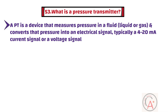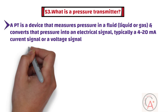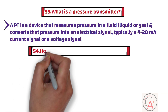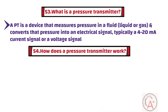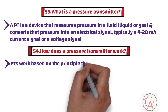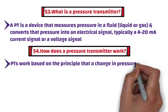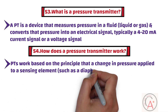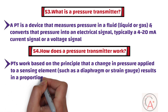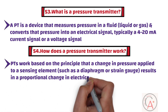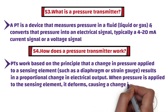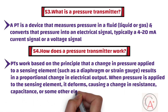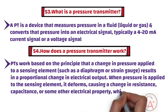Question 54: How does a pressure transmitter work? Pressure transmitters work based on the principle that a change in pressure applied to a sensing element — such as a diaphragm or strain gauge — results in a proportional change in electrical output. When pressure is applied to the sensing element, it deforms, causing a change in resistance, capacitance, or some other electrical property, which is then converted into an electrical signal that represents the pressure.